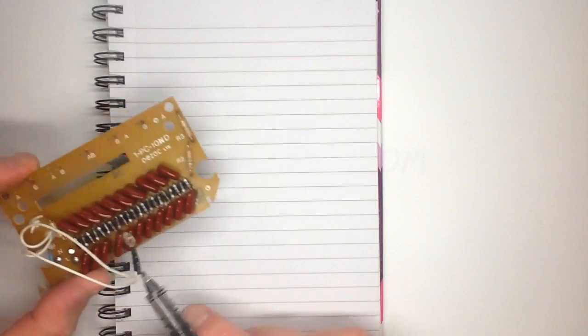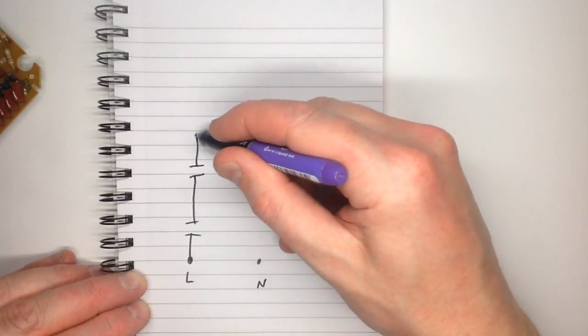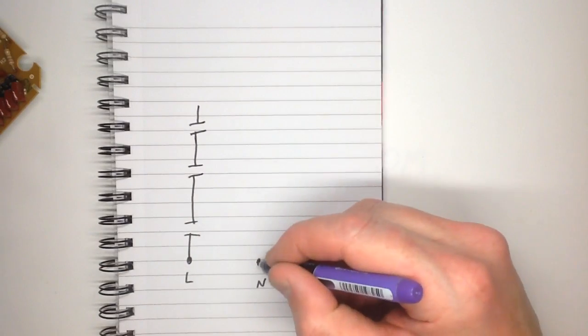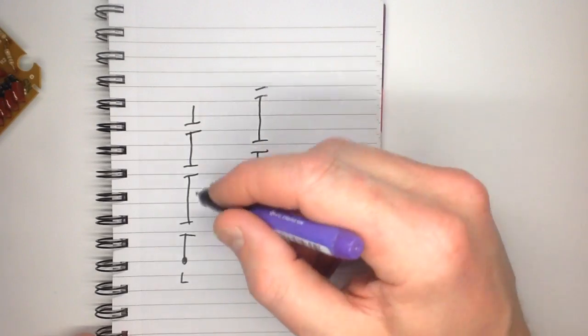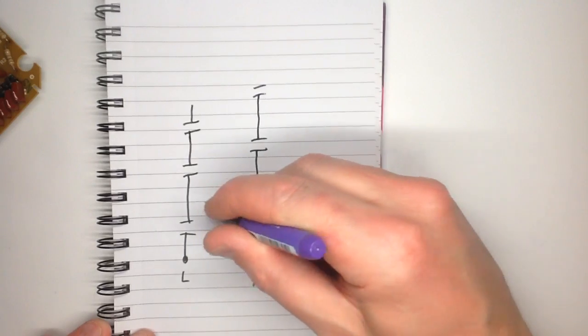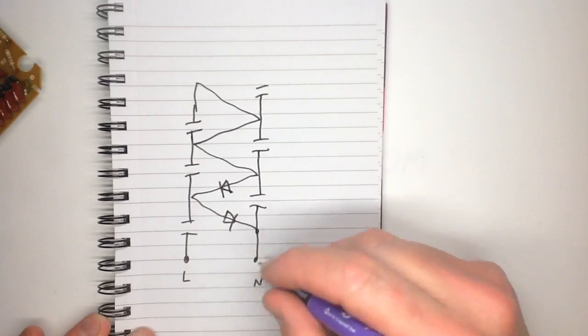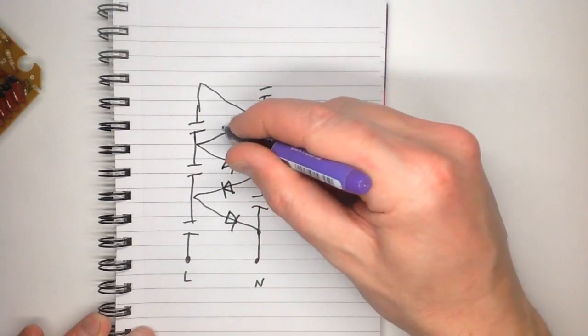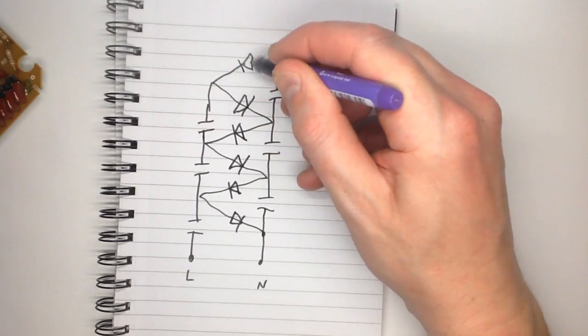Now for those of you who aren't familiar with ionizers let me draw you a quick doodle. A typical capacitive multiplier version of the ionizer has live, neutral, and typically speaking it's a line of capacitors. It's what's called pretty much a Walton-Cockroft capacitive diode multiplier.